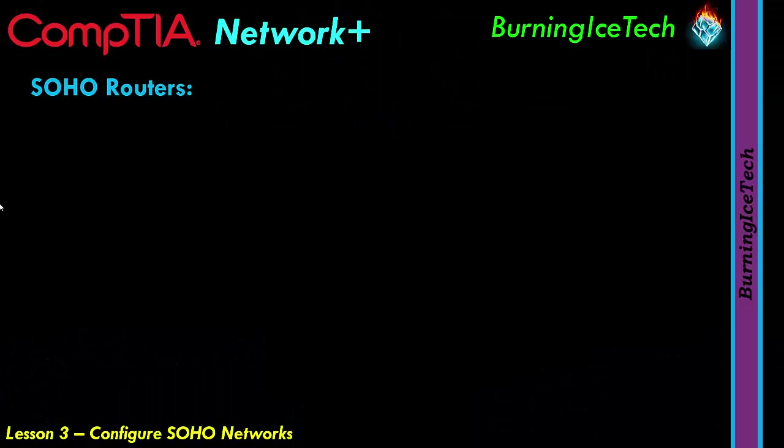The first and main thing we're going to talk about regarding SOHO networks is the router. In a SOHO environment, the first thing you'll notice is they all have what we call a local area network, or LAN for short. A network in a single location is often described as a LAN, but there is not actually a specific size to a LAN.